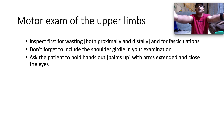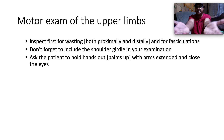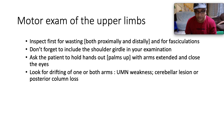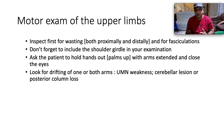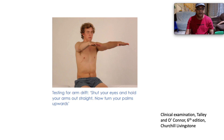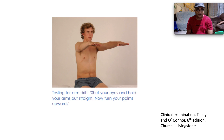Ask the patient to hold the hands out palms up with arms extended and close the eyes — hands supinated. Look for drifting of one or both arms, which is called the pronator drift. A pronated drift could signify upper motor neuron weakness, a cerebellar lesion, or posterior column loss. Also note any tremor or pseudoathetosis due to proprioceptive loss — the patient makes searching movements because they can't perceive where their joint is in space.